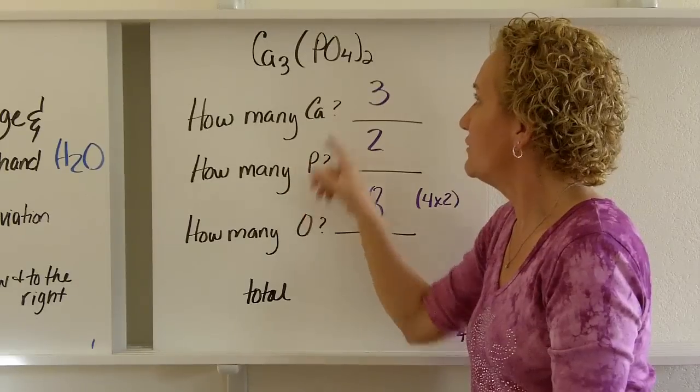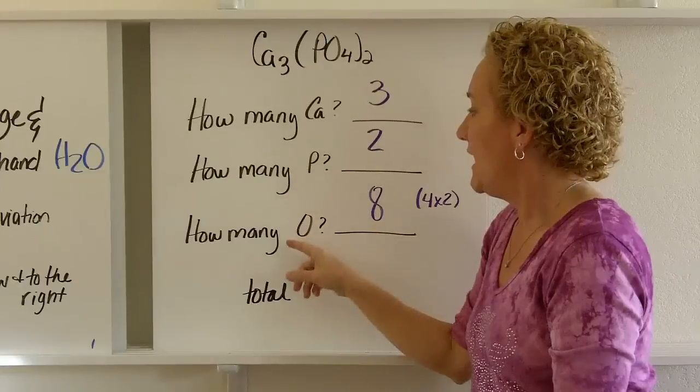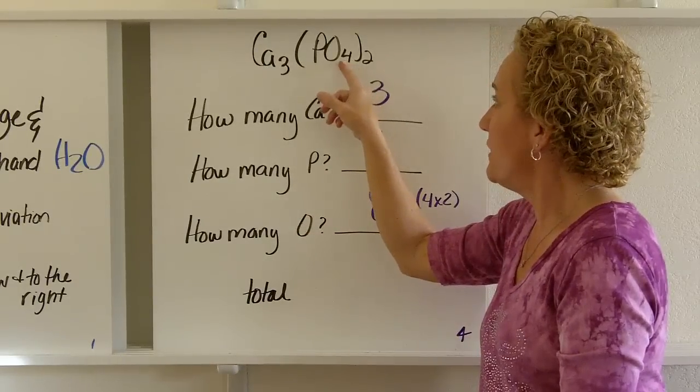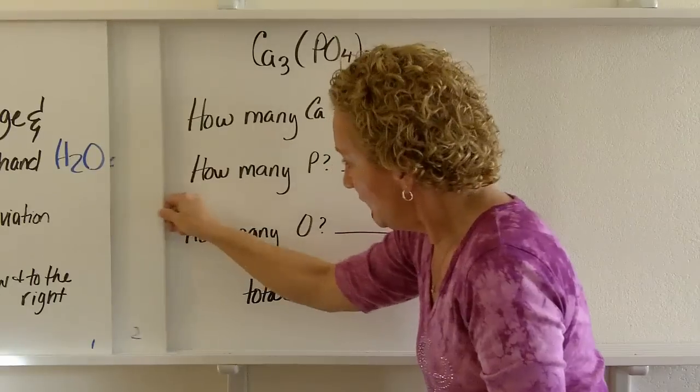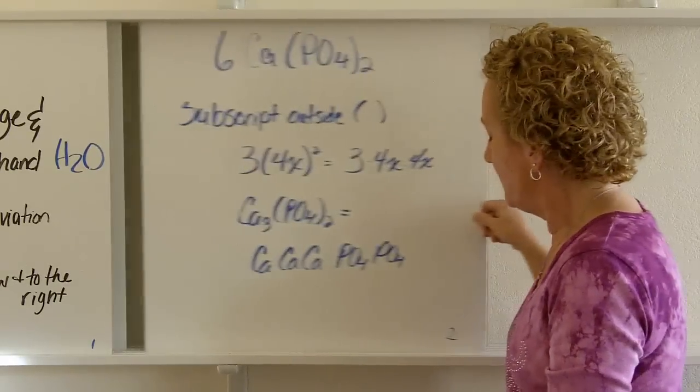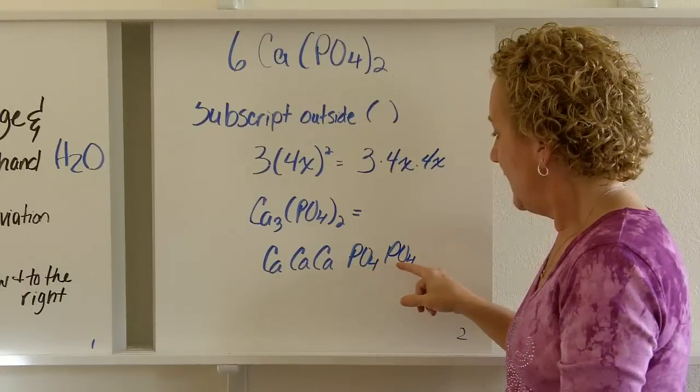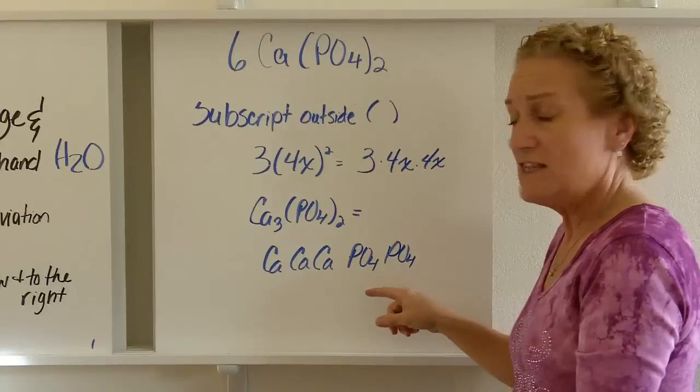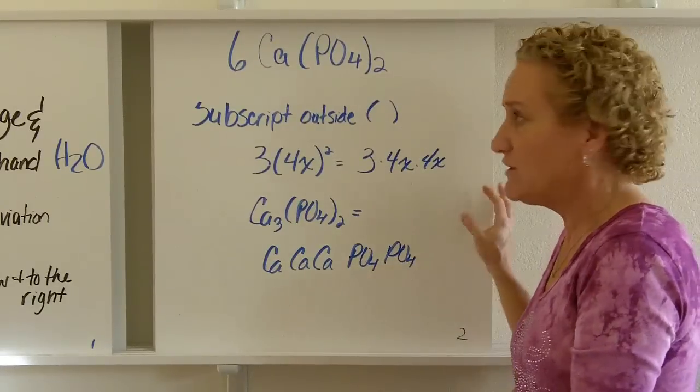How many phosphorus do we have? 2. And how many oxygens? We actually have 8 because it's PO4 taken twice, and let's see if I can find the right slide. Here we go, 4, 8. If I drew those out, I'd have 4 O's and 4 O's, so you'd see it is 8 O's, but all you have to do is multiply.